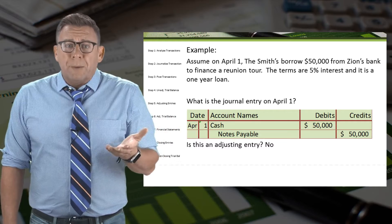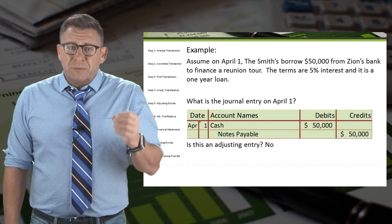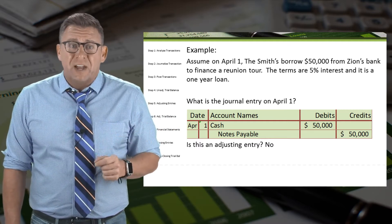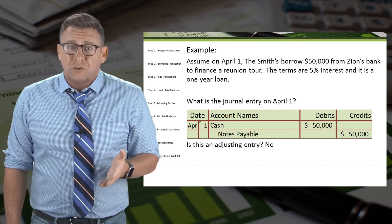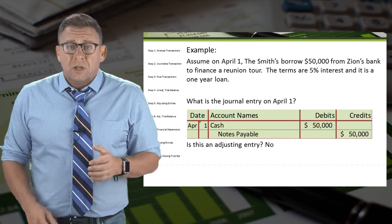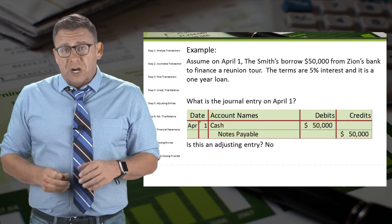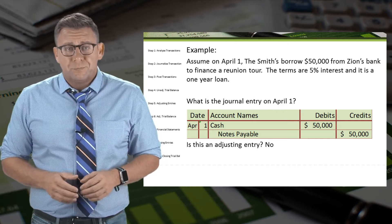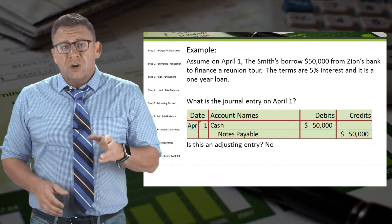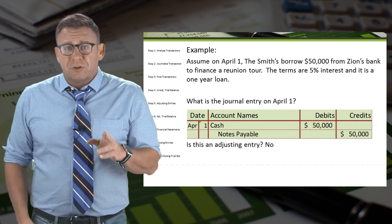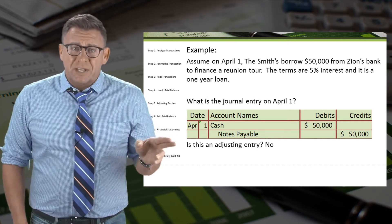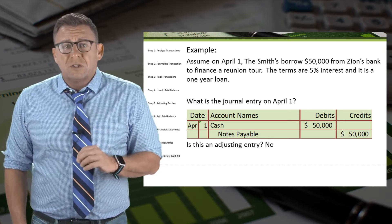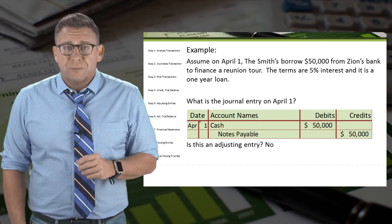Assume on April 1, the Smiths borrow $50,000 from Zions Bank to finance a reunion tour. The terms are 5% interest and it's a one-year loan. The journal entry on April 1 is a debit to cash and a credit to notes payable for $50,000.